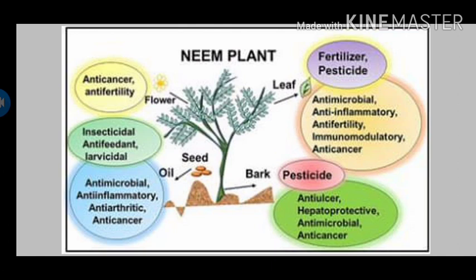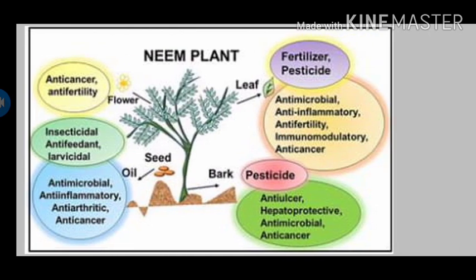Some uses of the neem plant — this is also a wild resource. It has anticancerous properties, insecticide properties, antibacterial and antimicrobial properties, anti-arthritis properties, and acts as a pesticide killer. Its seeds are used to make fertilizers, and it has anti-inflammatory properties. It is also used in many beauty products and soap products. You can search more about it.